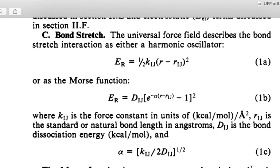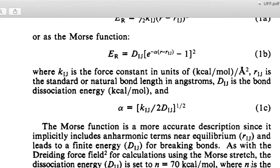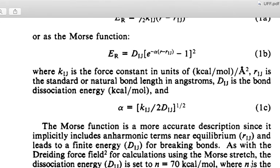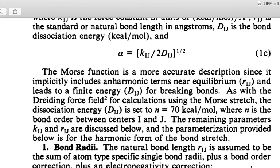A difference in this one is that it includes a constant embedded in it to represent the breaking of bonds, as it says below. It also says that it can be better for anharmonicity. I think this square root changes part of the behavior of the exponential squared.